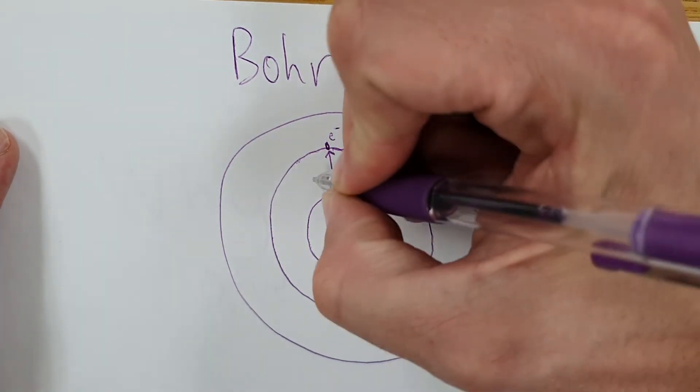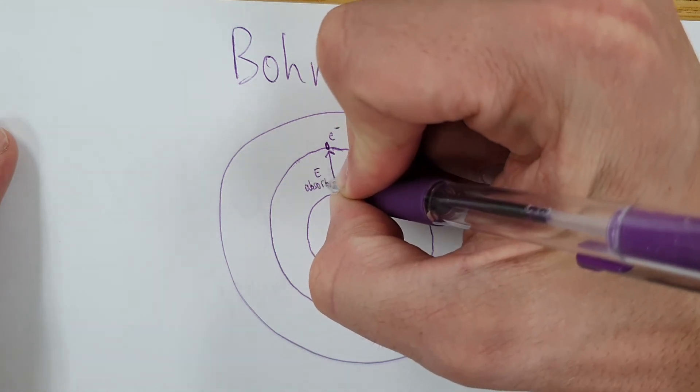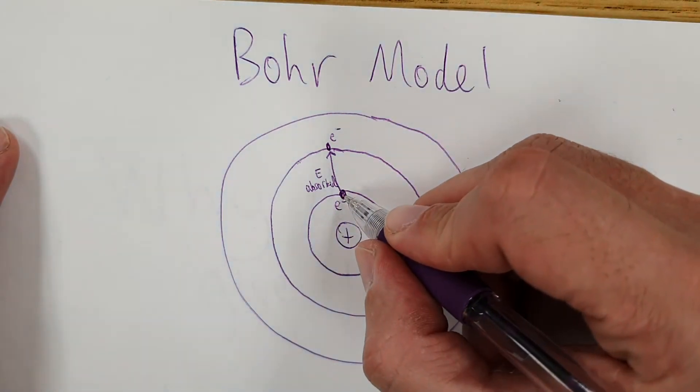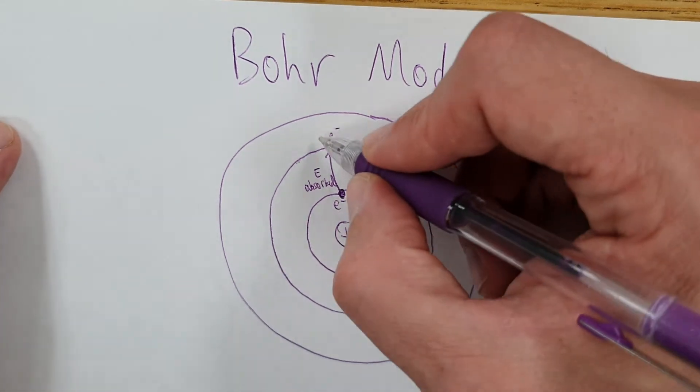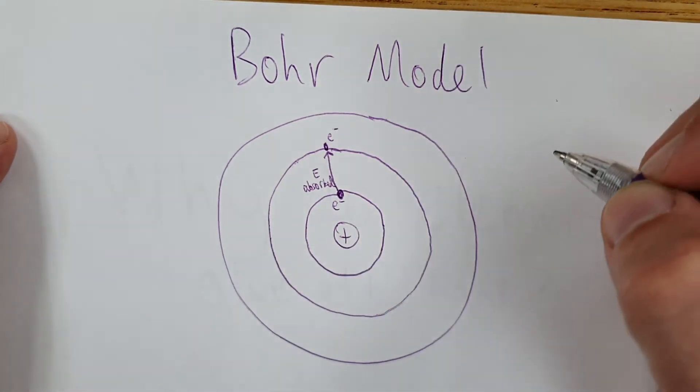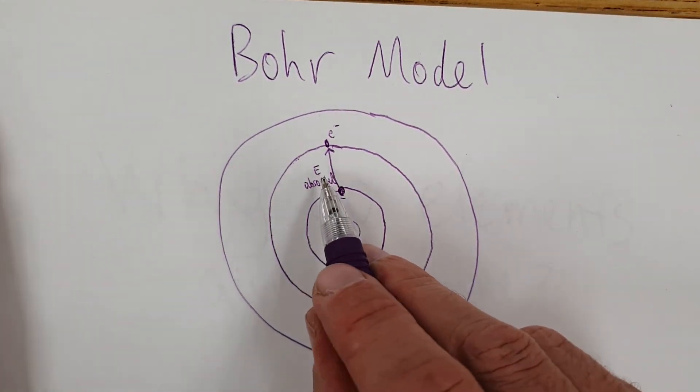So energy absorbed, this is the ground state. If it absorbs energy it rises to an excited state. It can be any energy level above where it started at. So this is an excited state, this is a potential excited state. The energy if it's absorbed will not be held on forever.